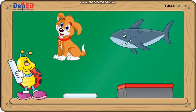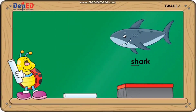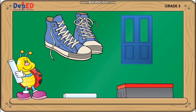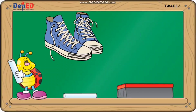Look at the two pictures closely. Which between them has consonant digraphs? The answer is Shark. Next set of pictures — which between the two pictures has consonant digraphs? The answer is Choose.